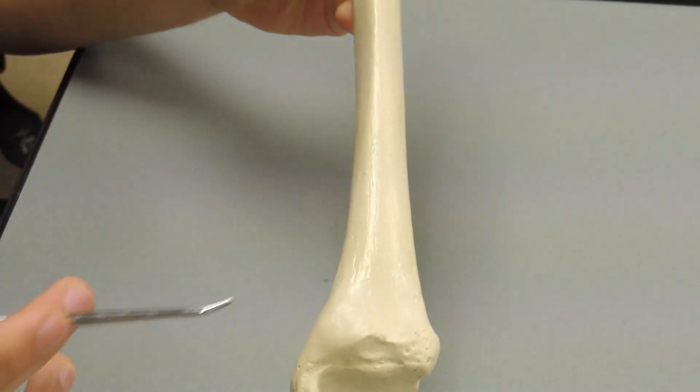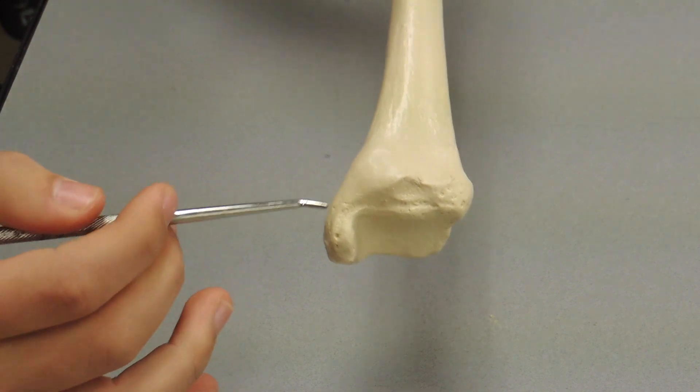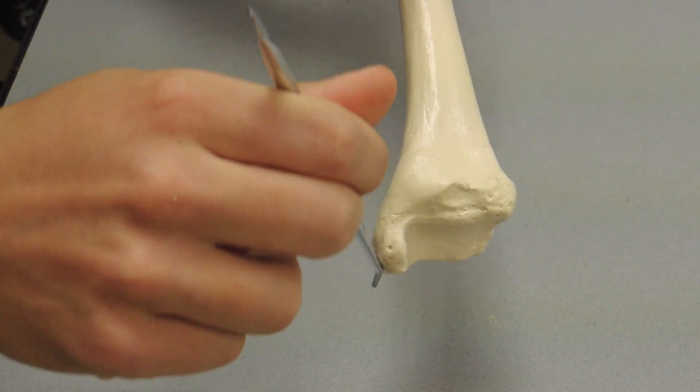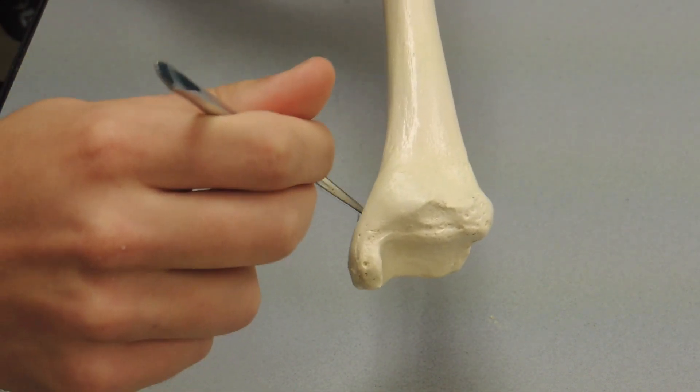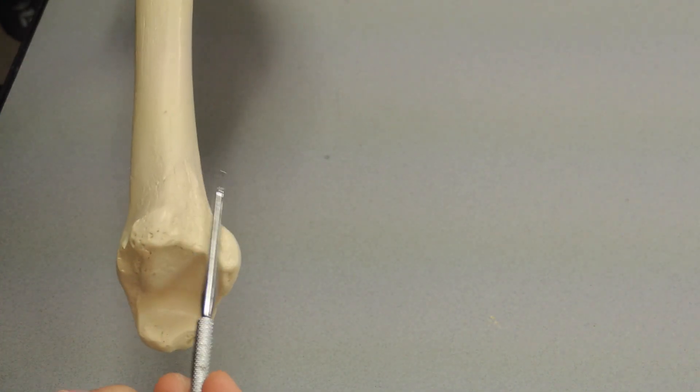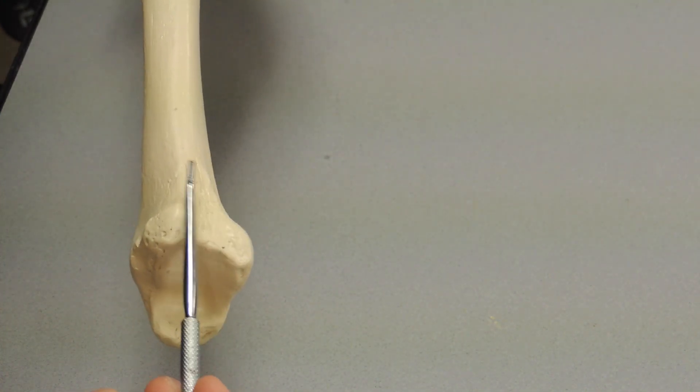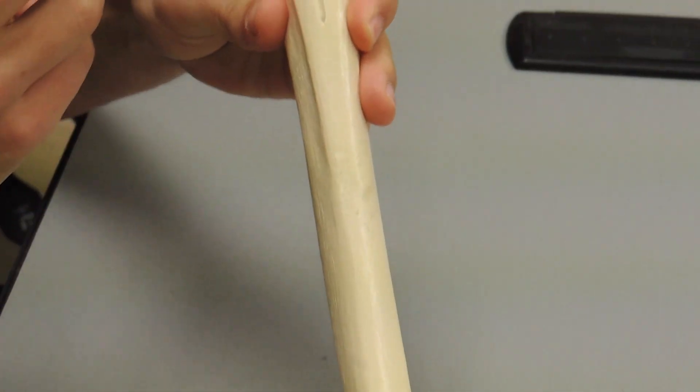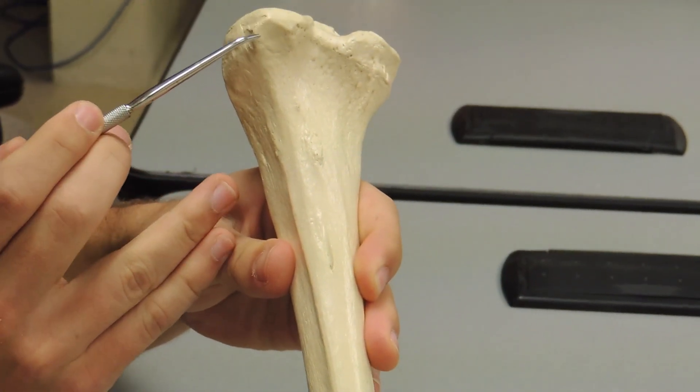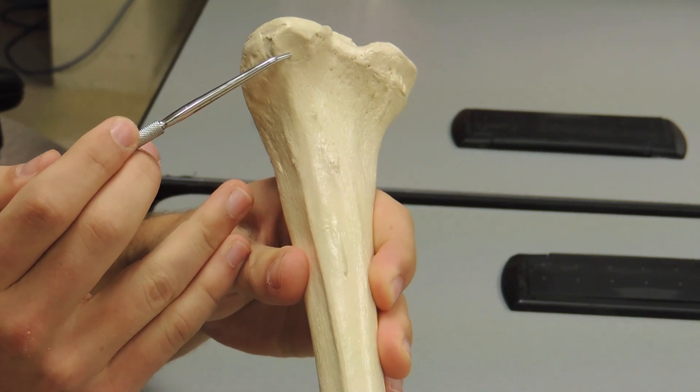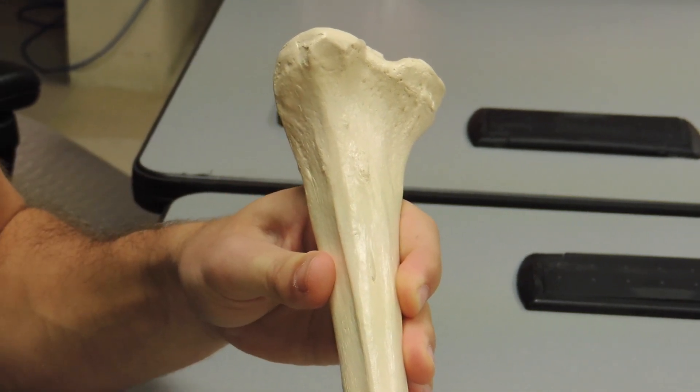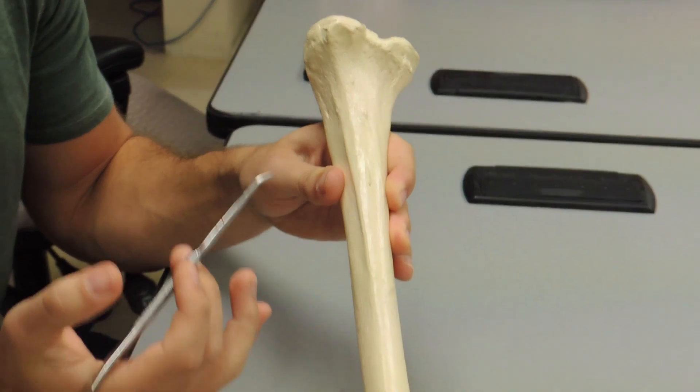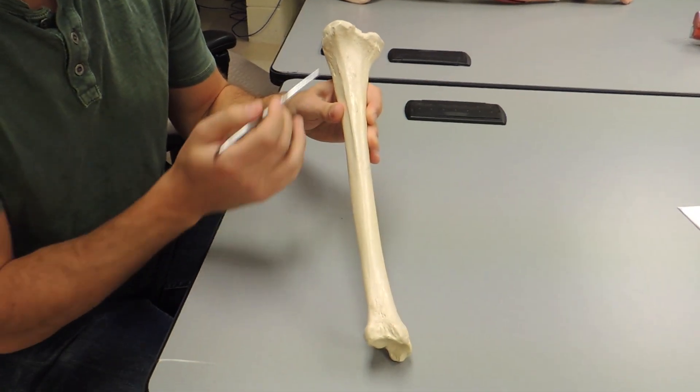On the bottom, or the distal end of the tibia, again on the medial side, you have your medial malleolus, and you have your fibular notch right here. And moving up here, you have your fibular articular facet. So these two are named fibula because that's what it articulates with, even though it's on the tibia.